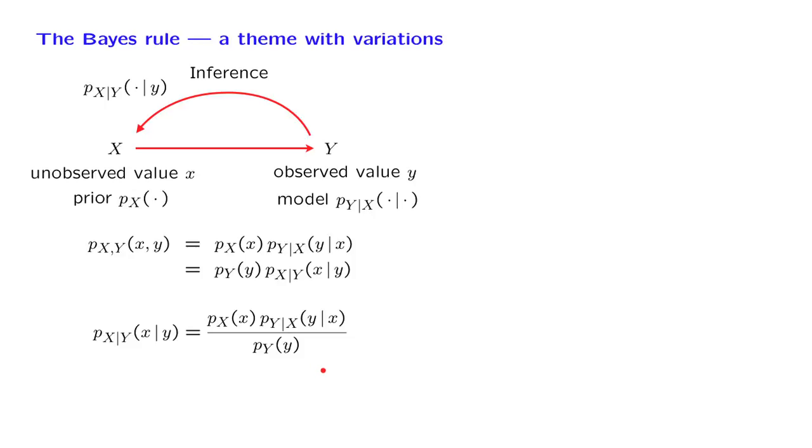What do we have here? We want to calculate the conditional distribution of X, which we typically call the posterior. And to do this, we rely on the prior of X, as well as on the model that we have for the observations. The denominator requires us to compute the marginal of Y, but this is something that is easily done because we have the joint available.